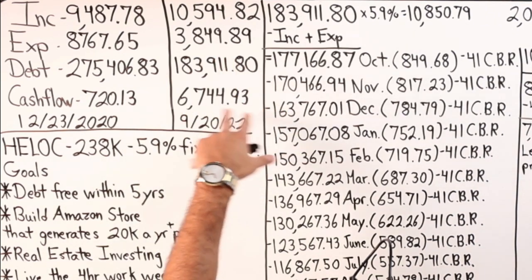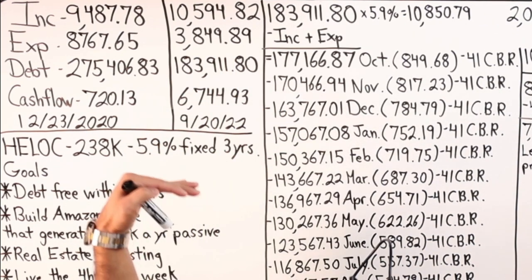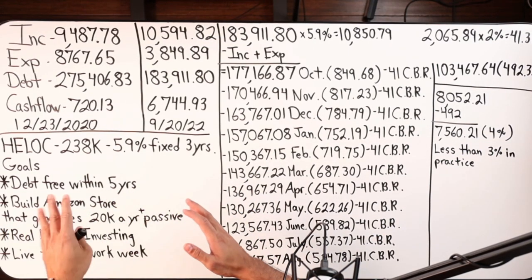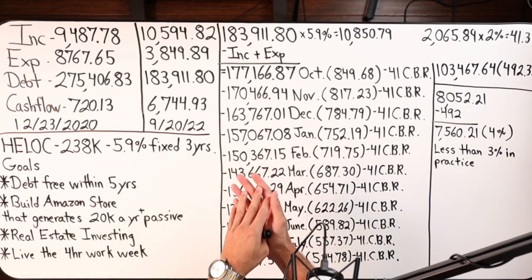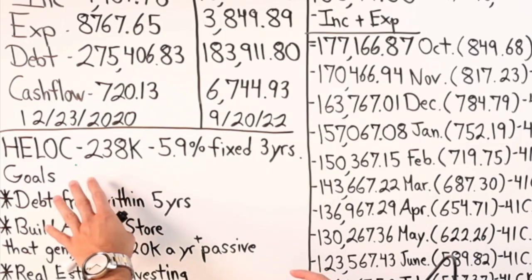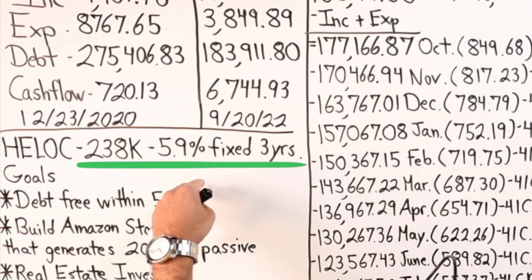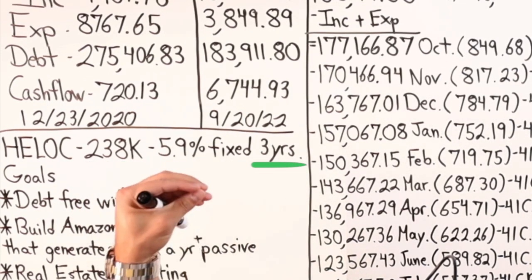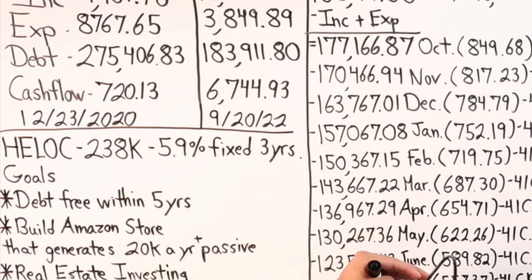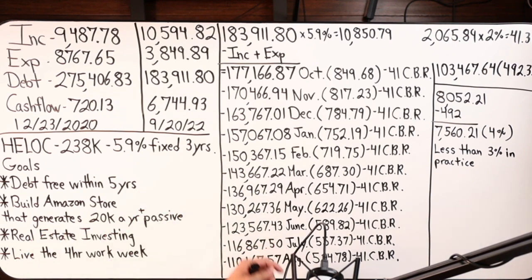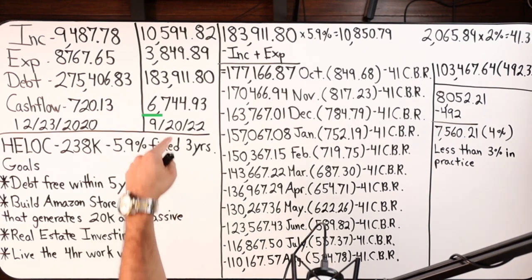Debt is at $183,911.80 and that is just one debt which is the first lien HELOC. They replaced their first lien mortgage balance and shifted it over to a first lien HELOC, which is what you see right here. The credit limit is $238,000, they were able to lock in a 5.9% fixed rate simple interest for the next three years, which is really cool in this environment where interest rates are continuously rising. That leaves us with a cash flow in 2022 now of $6,744.93.